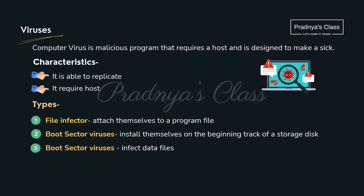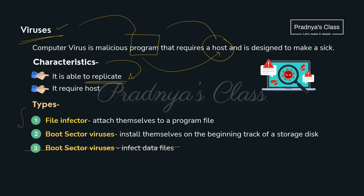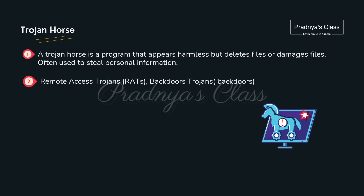Now we are going to discuss some ways our system can get infected. First is Virus — a program which requires a host, just like a biological virus. Without a human body, a biological virus cannot spread; similarly, this program needs a device. The main characteristic of the virus is that it will replicate. Types include file infector and boot sector virus. A famous example is Trojan horse — it appears harmless but deletes or damages files.